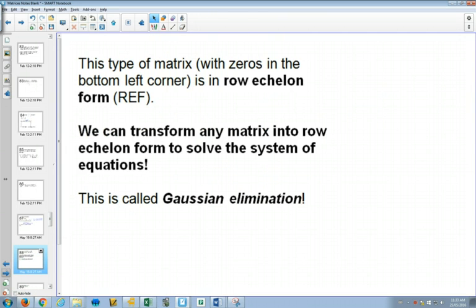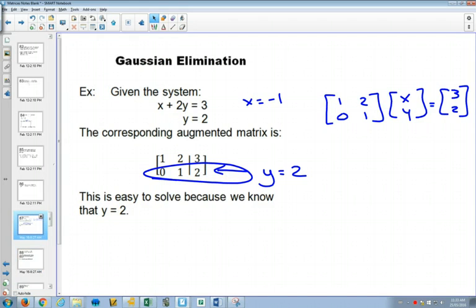Now, if we set up an augmented matrix, if we can transform that matrix so it can look like this right here, with just a 0 in the bottom left-hand corner and a 1, 1, then it's easy to tell that y would have to equal 2. And then you could go back and substitute afterwards.